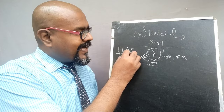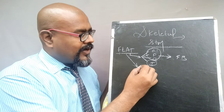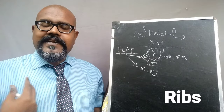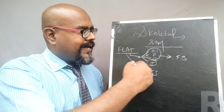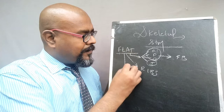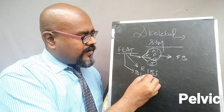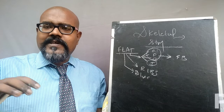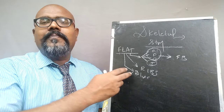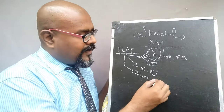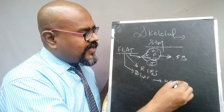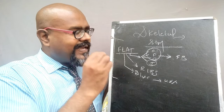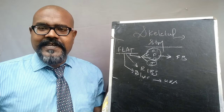Apart from the temporal lobe, all these lobes are covered by flat bones. The next region where flat bones are present is your ribcages — that is in the chest region. The ribcages are made up of flat bones. And then your pelvic region — mostly 40% of the pelvic bones are made up of flat bones.